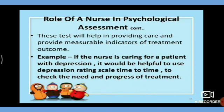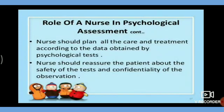Psychological tests help nurses provide measurable indicators of treatment outcomes. For example, if a nurse is caring for a patient with depression, it would be helpful to use a depression rating scale periodically to check the need and progress of treatment. Nurses should plan all care and treatment according to data obtained by psychological tests. Nurses should also reassure patients about the safety of the test and the confidentiality of the observations.